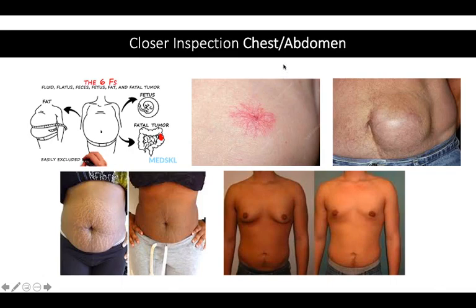On inspection of the chest and abdomen: if someone has abdominal distension, the causes can be remembered by the six F's — fluid, flatus, faeces, fetus, fat, and a fatal tumour (more commonly known as the five F's). These are the things to think about if someone presents with gross abdominal distension.